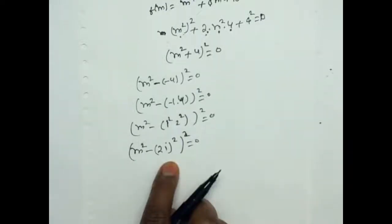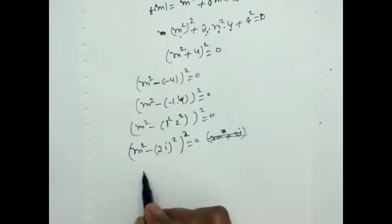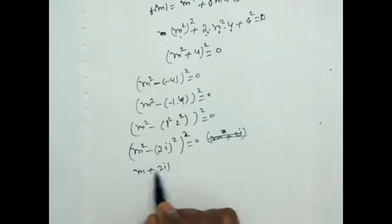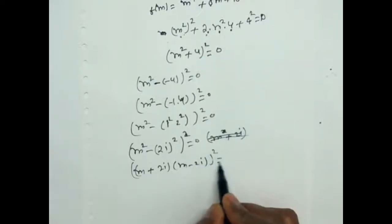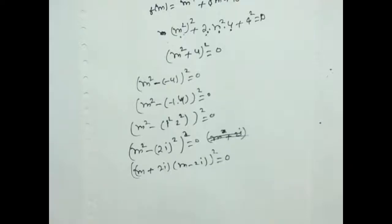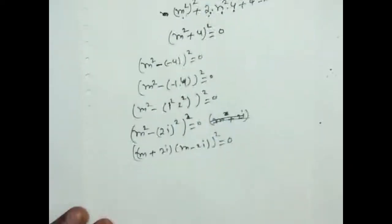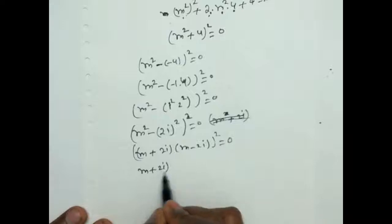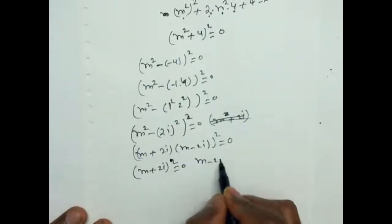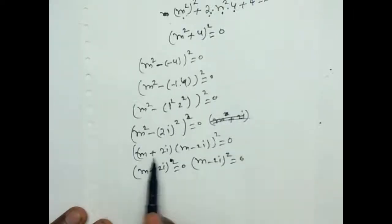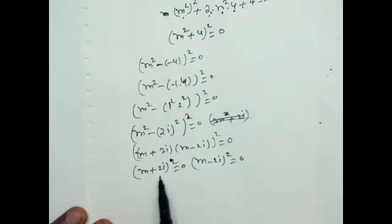This is the form a² − b², and a² − b² = (a + b)(a − b). So we have [m + 2i]² × [m − 2i]² = 0. Therefore (m + 2i)² = 0 and (m − 2i)² = 0.